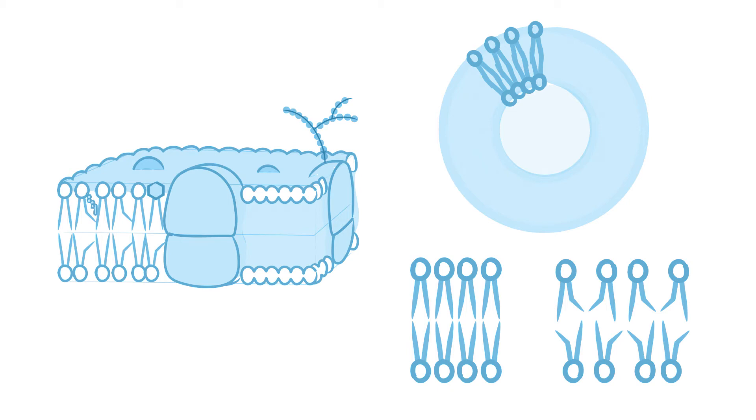Here we'll learn about the cell membrane, which separates the inside of the cell from its external environment. First, start a table to summarize the major features of the plasma membrane.